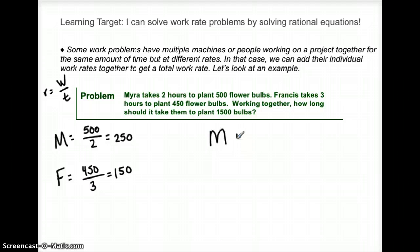But here's what I want to know. Myra and Francis working together, so Myra plus Francis, will equal 1500 bulbs getting planted how fast? So I'm solving for that T.